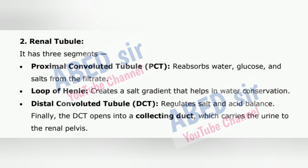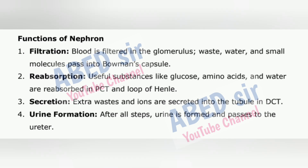2. Renal tubule — it has three segments: Proximal Convoluted Tubule (PCT) reabsorbs water, glucose, and salts from the filtrate. Loop of Henle creates a salt gradient that helps in water conservation. Distal Convoluted Tubule (DCT) regulates salt and acid balance. Finally, the DCT opens into a collecting duct, which carries the urine to the renal pelvis. Functions of the nephron: 1. Filtration — blood is filtered in the glomerulus; waste, water, and small molecules pass into Bowman's capsule. 2. Reabsorption — useful substances like glucose, amino acids, and water are reabsorbed in PCT and loop of Henle. 3. Secretion — extra wastes and ions are secreted into the tubule in DCT. 4. Urine formation — after all steps, urine is formed and passes to the ureter.